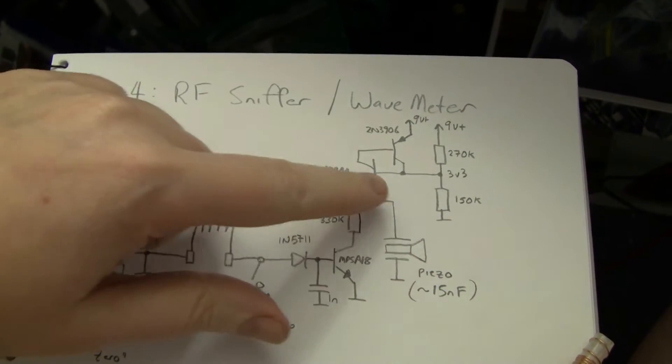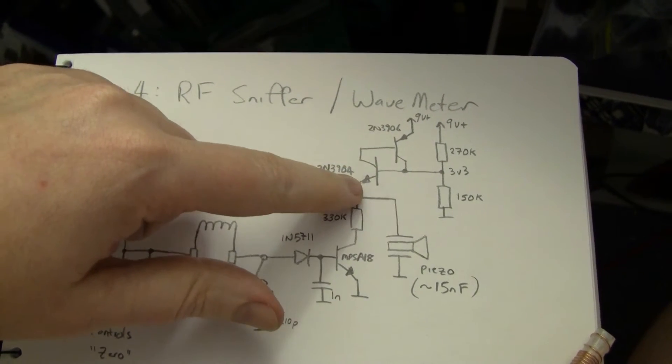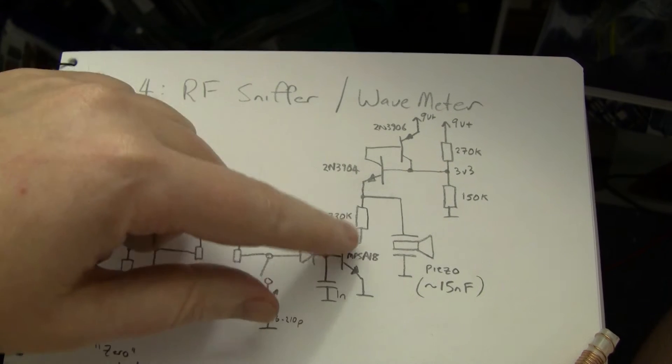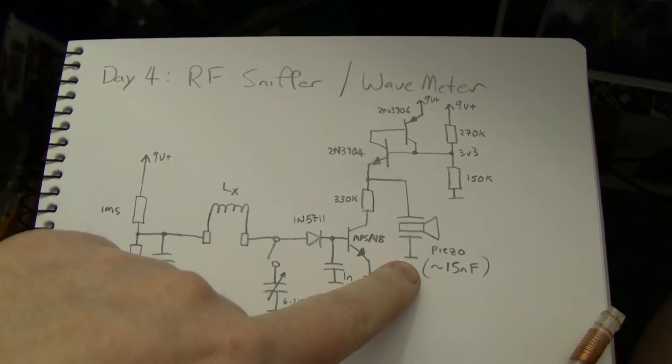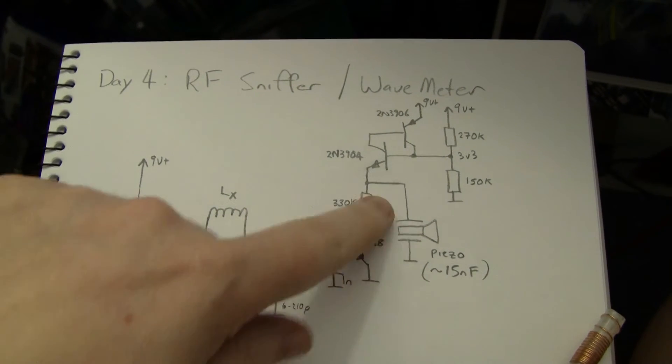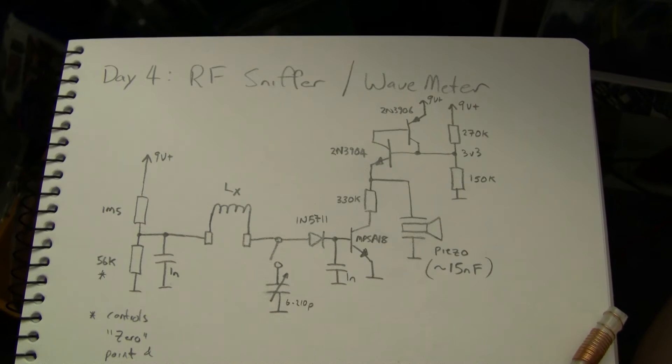At which point it slams on and discharges the capacitance. In this case, I've actually used the piezo element's capacitance itself. I had some additional capacitance across here, but it turned out that the 15nF or so of the piezo was ideal for the circuit.